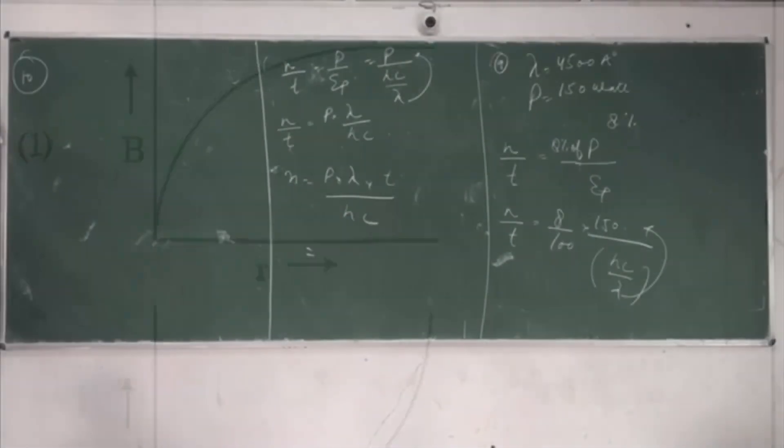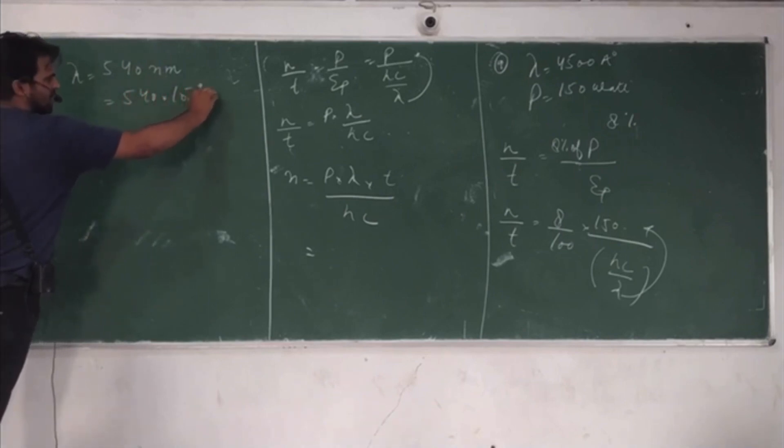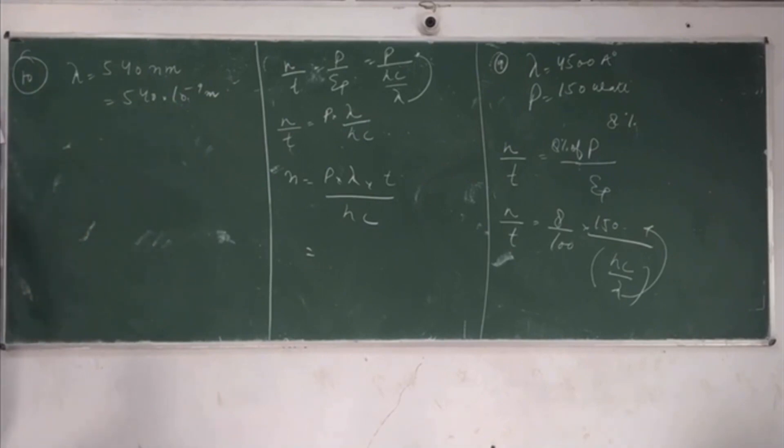Number of photons of wavelength 540 nanometer, 540×10⁻⁹ meter, emitted per second by 100 watt lamp. Power output 100 watt. What is the formula? P divided by EP, where P, EP... lambda.